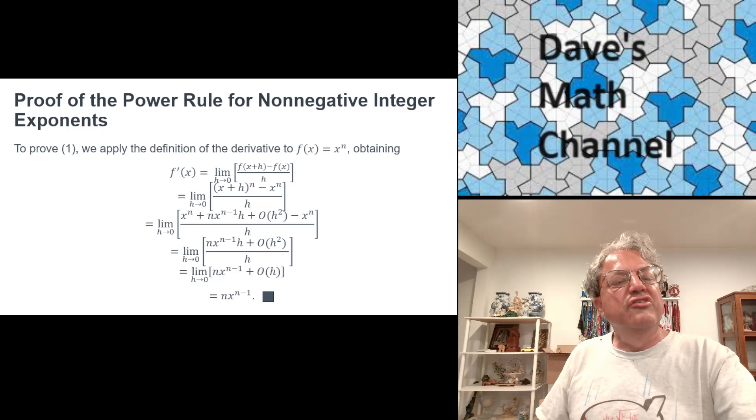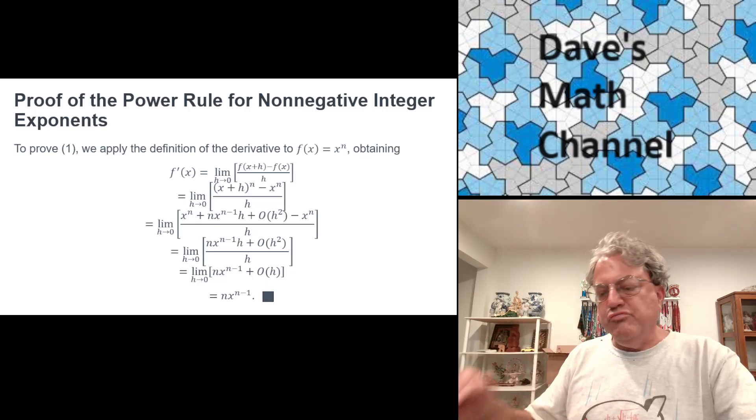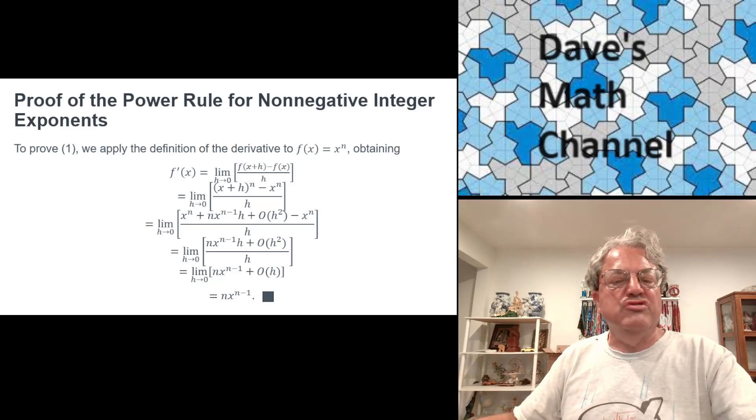The h got canceled in the numerator and it got canceled in the O of h squared. That just becomes an O of h. Now O of h, as h goes to zero, the limit of O of h is going to be zero. Because remember, O of h just means that we can ignore every power of h less than the first power. So if everything's being multiplied by h, and since h is going to zero, that's going to go to zero. We're left with just nx to the n minus 1. And that's what we want. That's the proof that the derivative of x to the n is nx to the n minus 1 for every non-negative integer n.